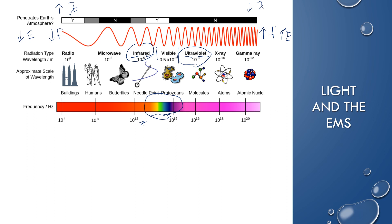Infrared literally means 'below red,' so it's closest to red in the visible spectrum. Past visible is ultraviolet — 'greater than violet.' X-rays and gamma rays have higher energies, shorter wavelengths, and more penetrating power. X-rays are used to image bones and teeth, and can be harmful in excess. Gamma rays are associated with nuclear radiation and are the most penetrating.